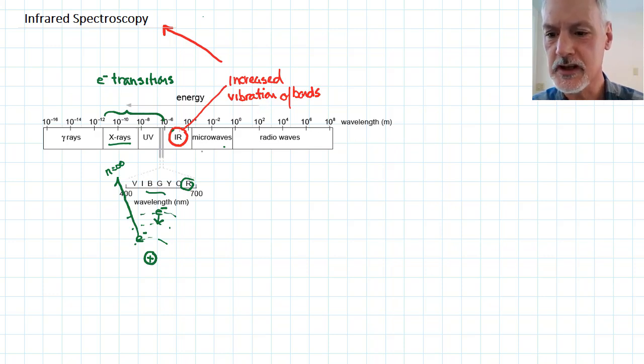What happens when we shine microwaves on a substance? Well, you might be familiar with a microwave oven. Essentially, the microwave oven focuses on the behavior or movement of water molecules. So if we shine microwaves on a particular water molecule at the appropriate energy level, we can cause that water molecule to rotate more quickly. So microwaves increase the rotation of molecules.